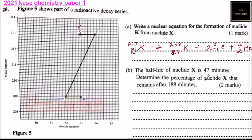Divide 188 minutes by the half-life of 47 minutes to get 4 half-lives. To determine the percentage, start with 100%, which becomes 50% after the first half-life, then 25%.